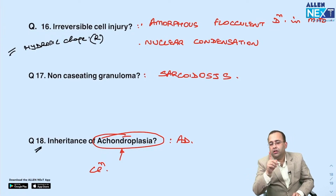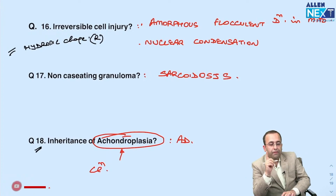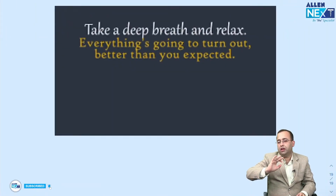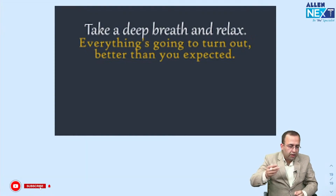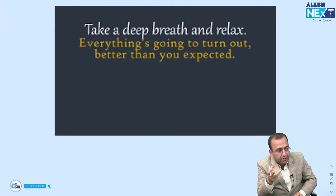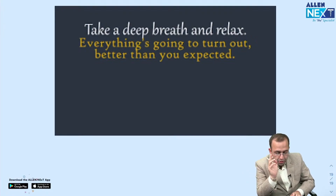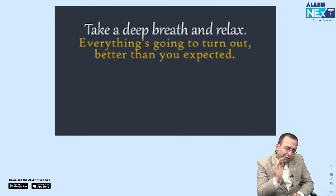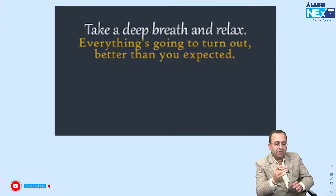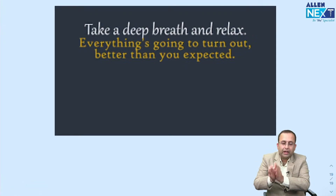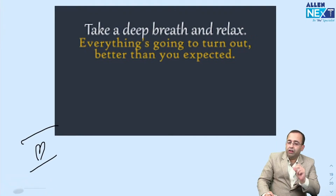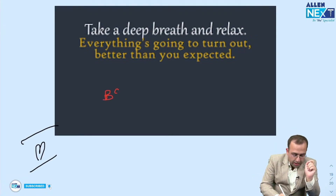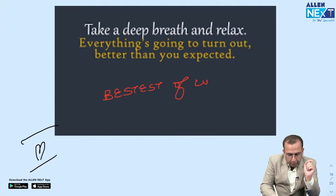Path was scoring — 18 to 19 questions, including dry eyes/dry mouth for Sjögren's syndrome. That is why pathology is your savior, irrespective of how tough paper one or paper two gets. Take my word for it — we are in this together. Take a deep breath, everything is going to turn out better than you expect. Best of luck from the bottom of my heart.